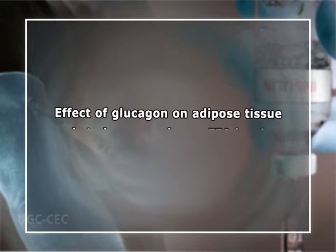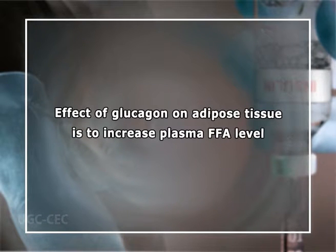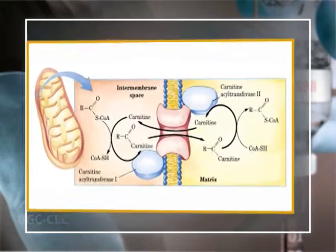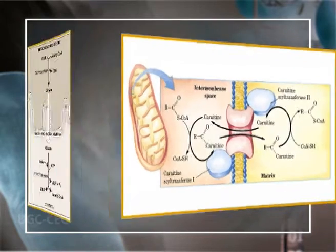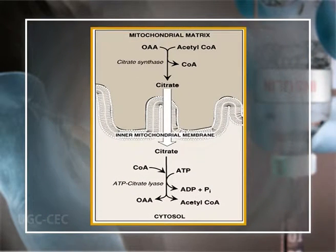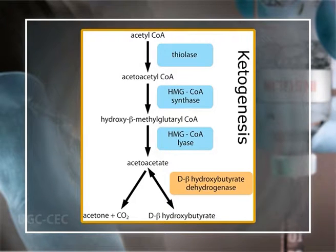The effect of glucagon on adipose tissue is to increase plasma FFA levels. Beta-oxidation is favored since carnitine acetyltransferase is activated by glucagon. The mitochondrial acetyl-CoA level increases and ketogenesis is favored. In a normal person, excessive ketogenesis is prevented by a balance between the effects of insulin and glucagon.